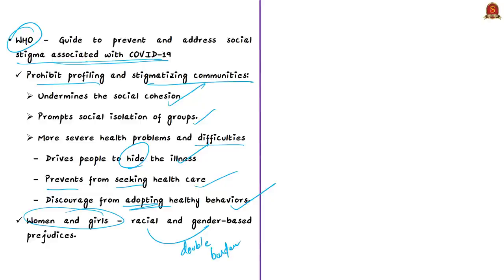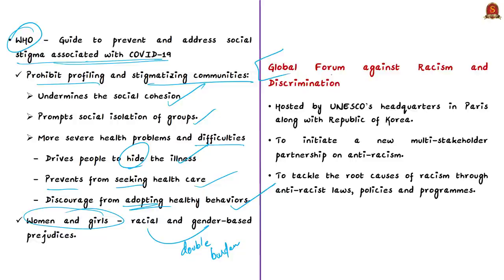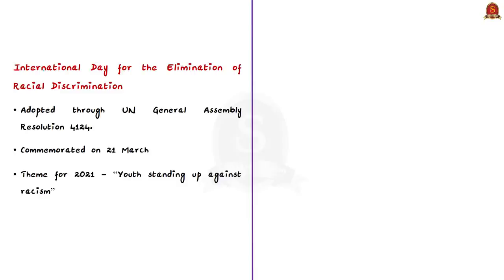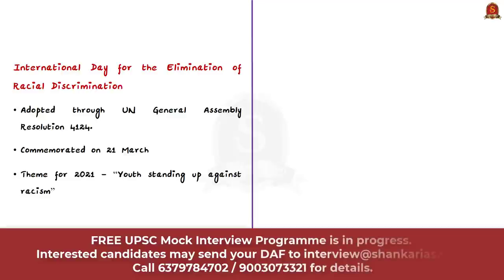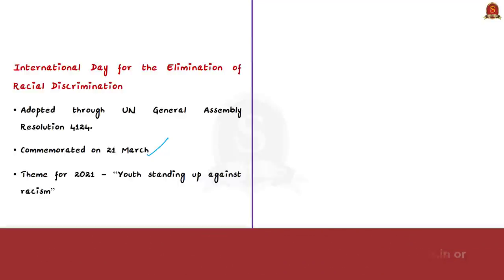UNESCO partnered with the Republic of Korea to host a Global Forum Against Racism and Discrimination on March 22nd, 2021. It was done to initiate a new multi-stakeholder partnership on anti-racism, inviting a multi-sectoral effort to tackle the root causes of racism through anti-racist laws, policies, and programs. This forum was organized in the wake of the International Day for Elimination of Racial Discrimination, commemorated on 21st March every year.